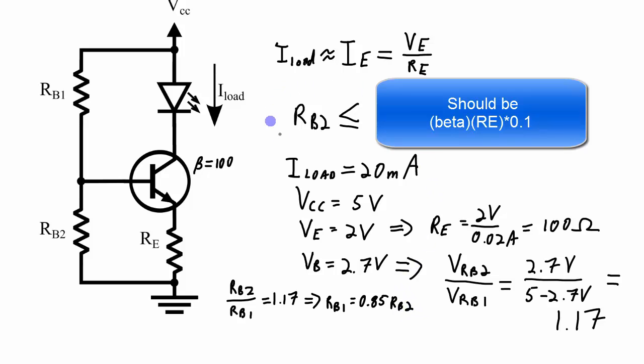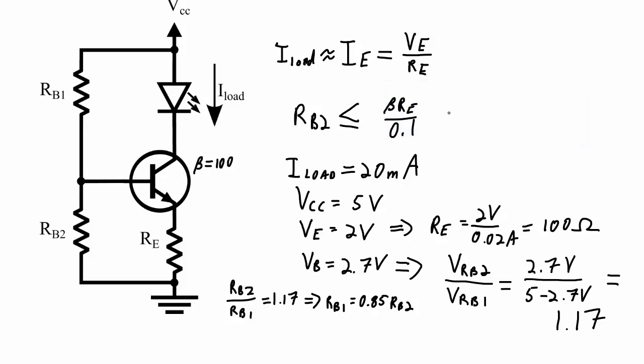That's the ratio of the voltages. That's also going to be the ratio of the resistances. RB2 over RB1 is equal to 1.17. If I rewrite this just in terms of RB1, I can say RB1 is equal to 0.85 times RB2. And I want to make sure that this is true. I've got a beta of 100. I've chosen my RE to be 100. 100 times 100 is 10,000 divided by... I've just realized that's not divided by 0.1, that's multiplied by 0.1.